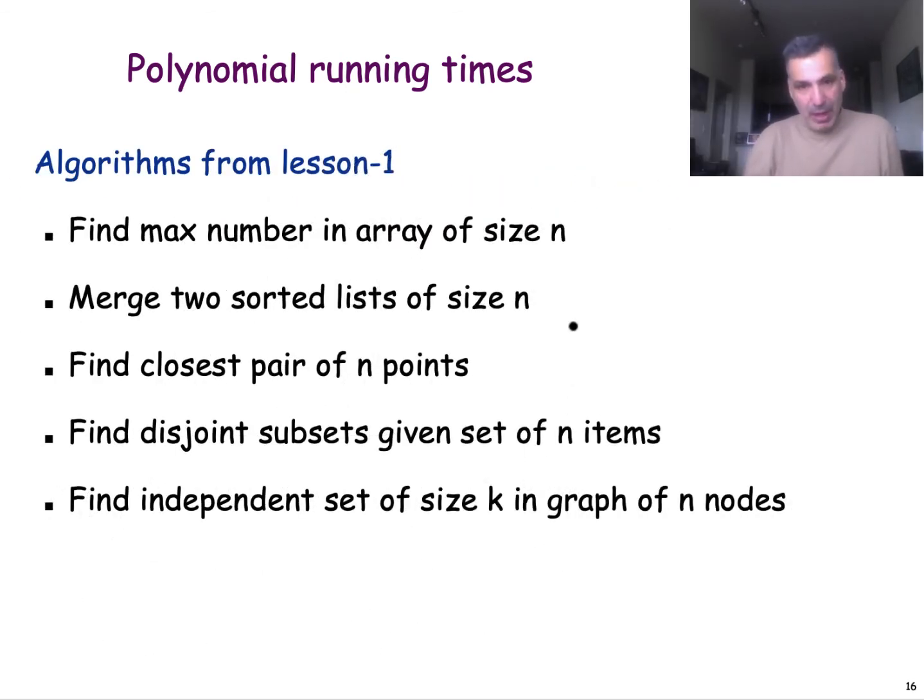Now, let's remember some of the algorithms we saw in lesson 1. Back then, we looked at the running time of the algorithms without giving an asymptotic growth function bound. For the algorithm that finds the maximum number in an array of size n, we had linear running time, so we can say that this algorithm is big O of n. The same is true for merging two sorted lists of size n.